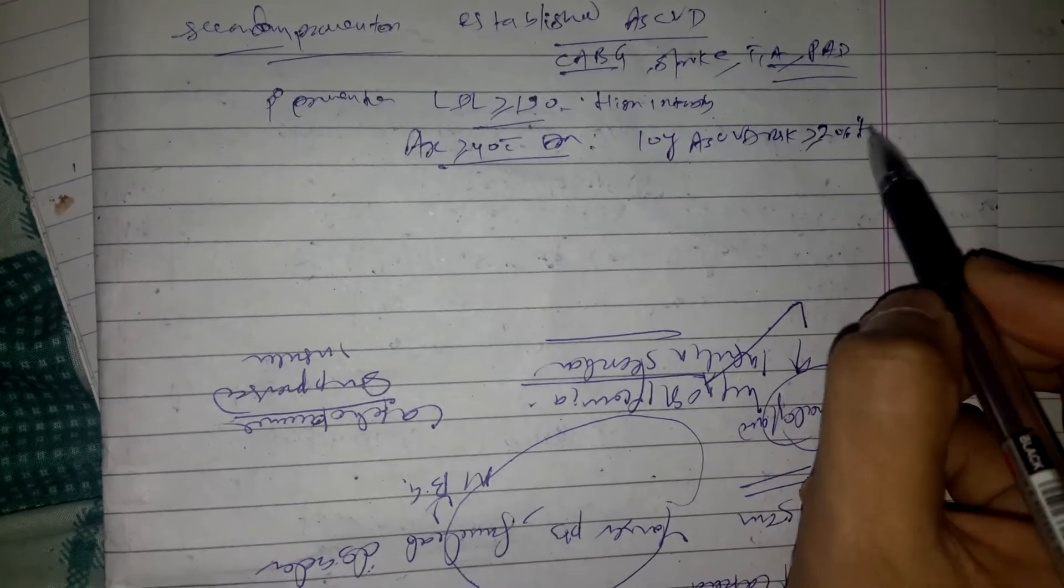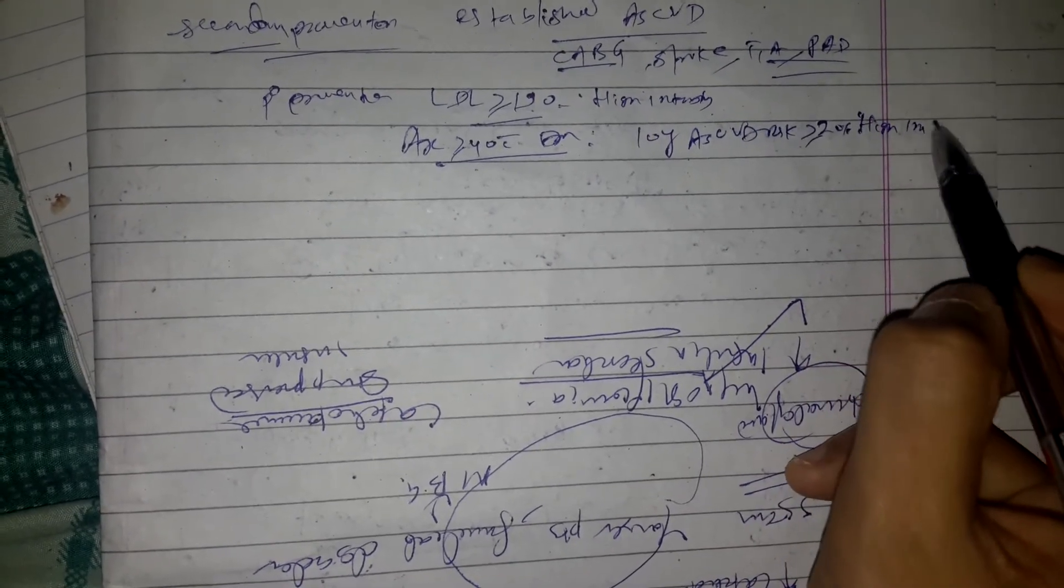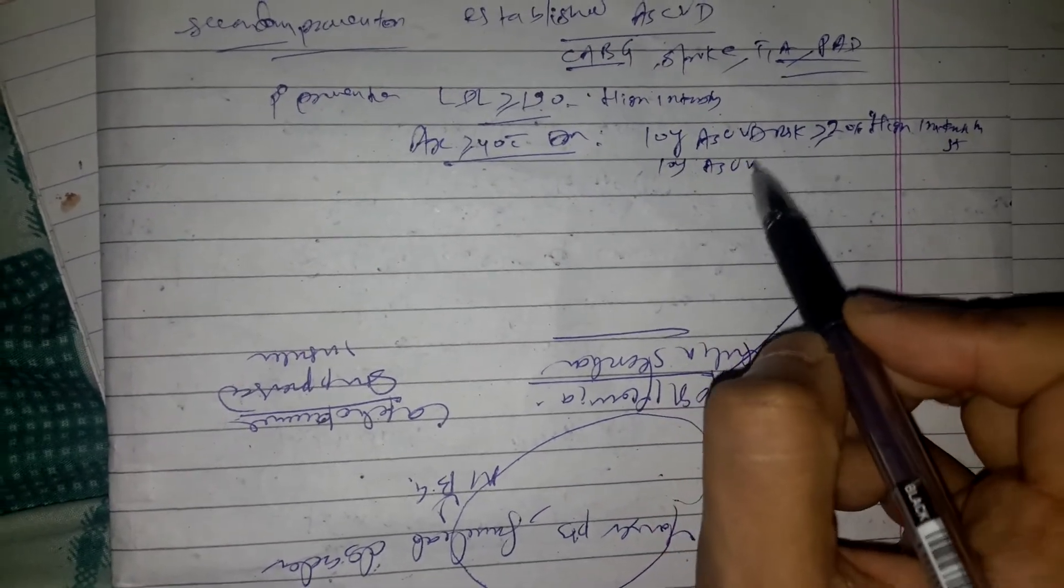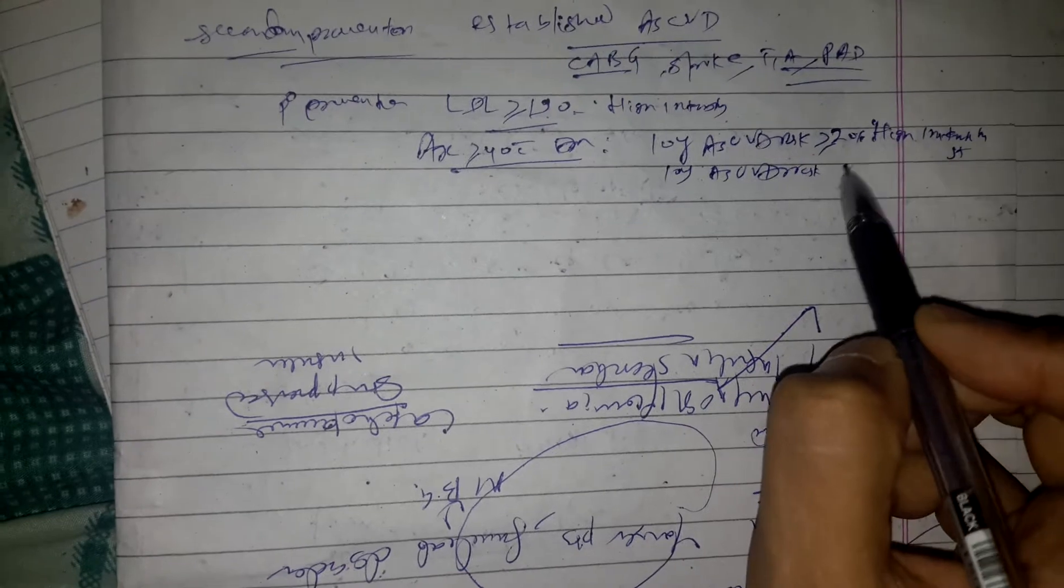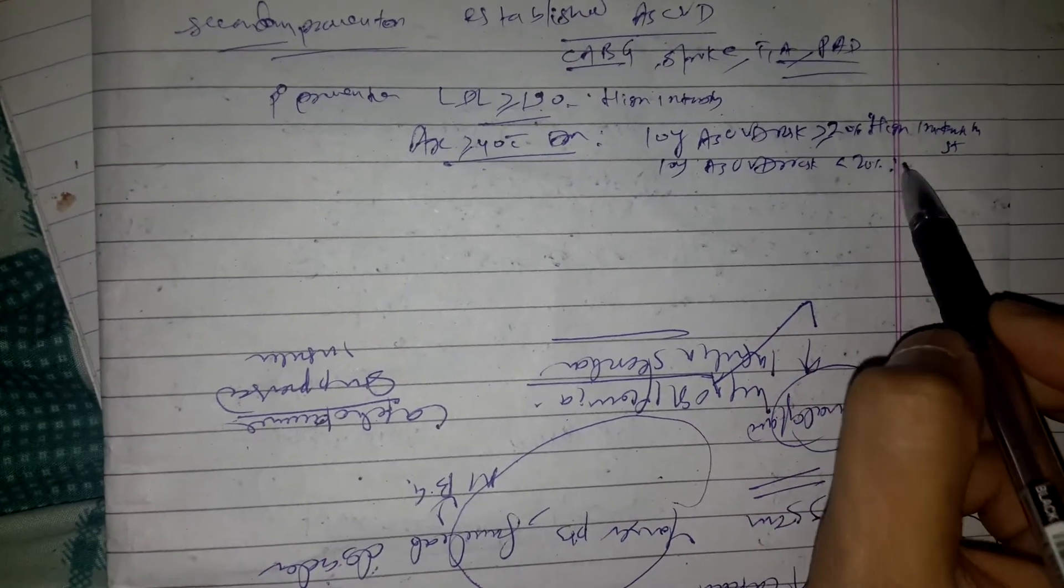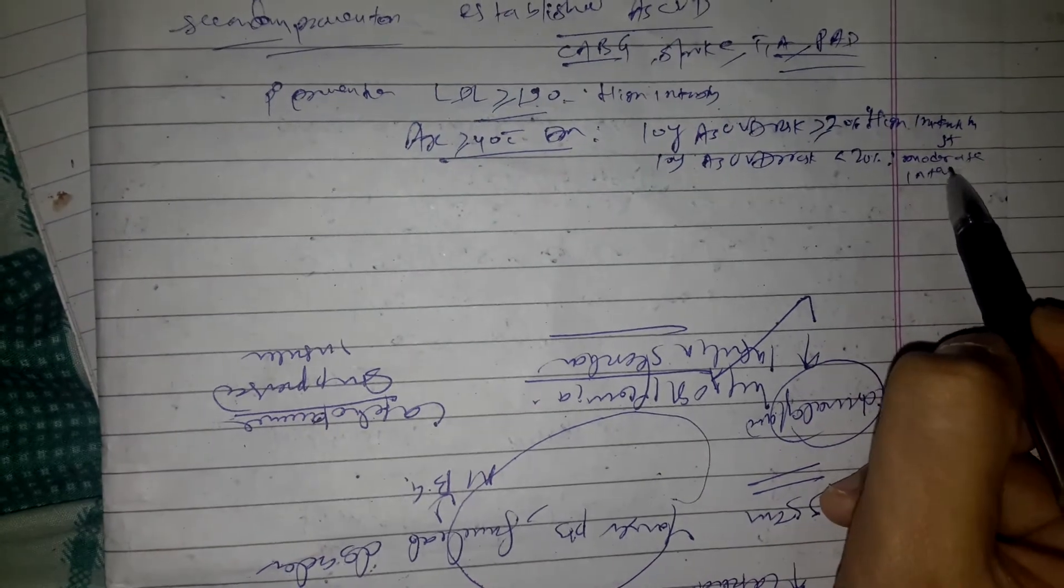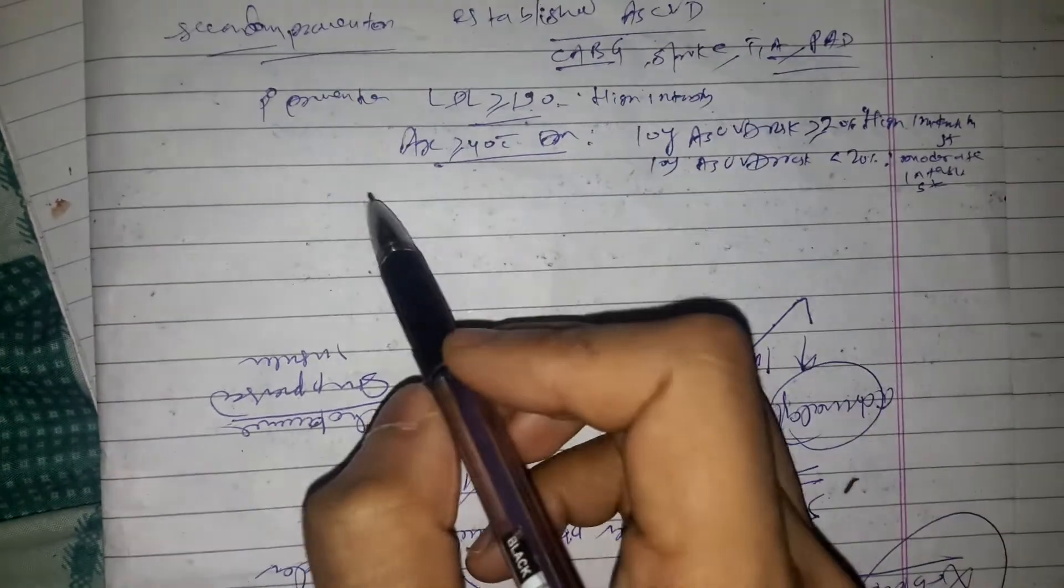If 10-year ASCVD risk is less than 20%, then we give moderate intensity statin.